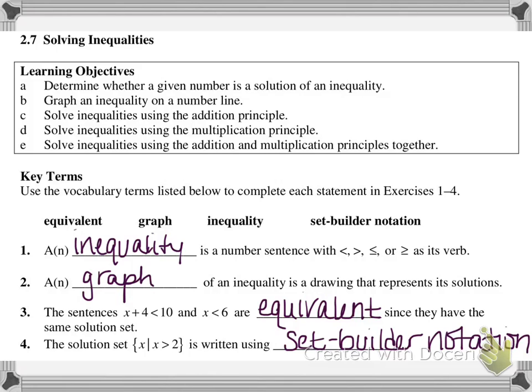The sentences 'x plus 4 less than 10' and 'x less than 6' are equivalent, since they have the same solution set. If you solve x plus 4 less than 10, you get x less than 6. The solution set — x such that x is greater than 2 — is written using set builder notation. There are two different ways to write your final answer: set builder notation, and interval notation that you'll see in the next algebra course.